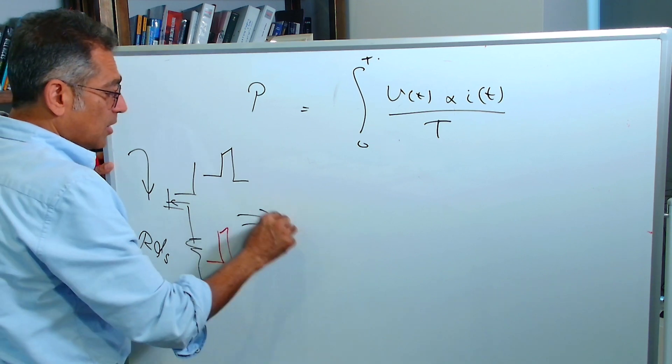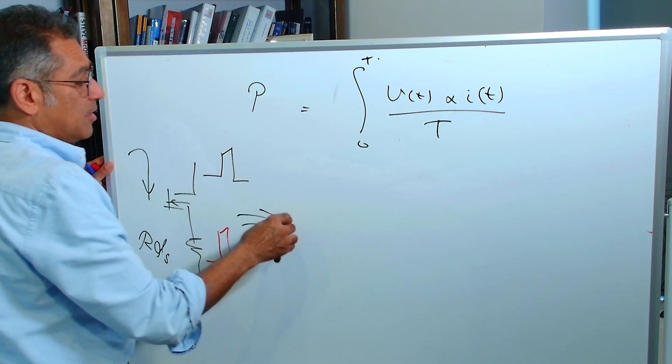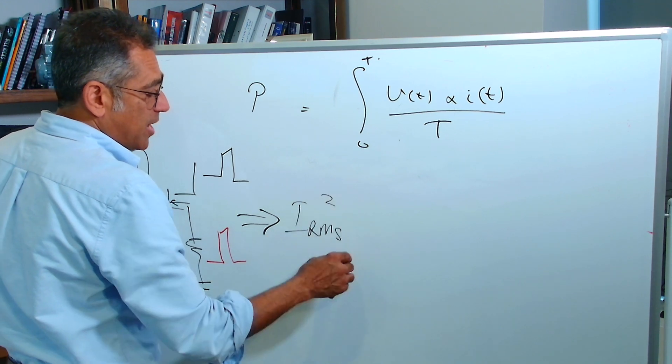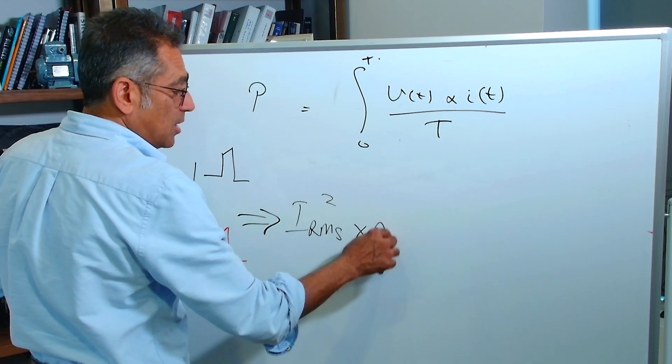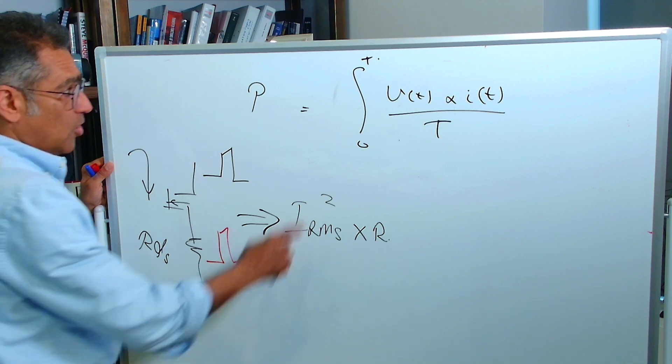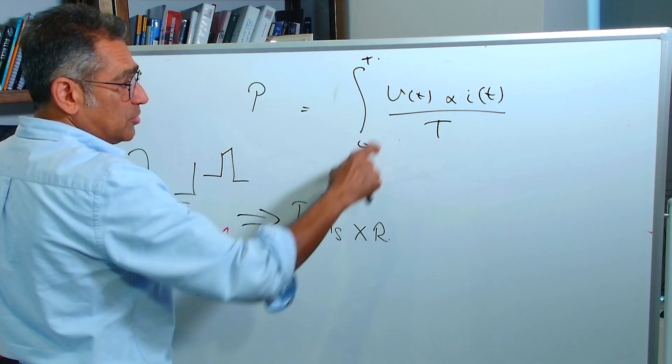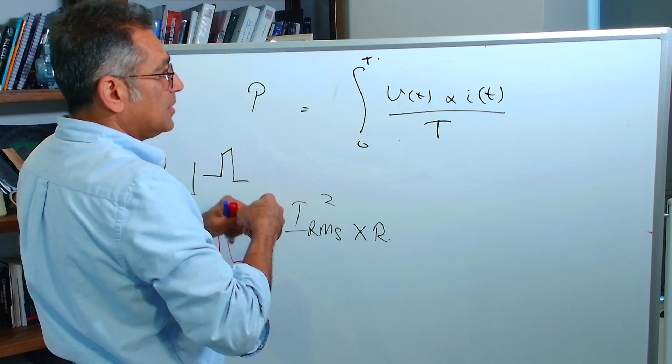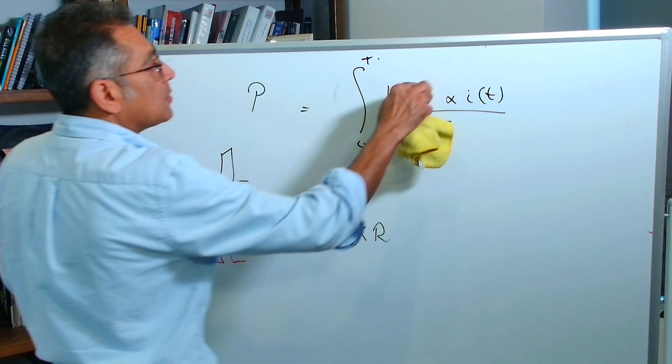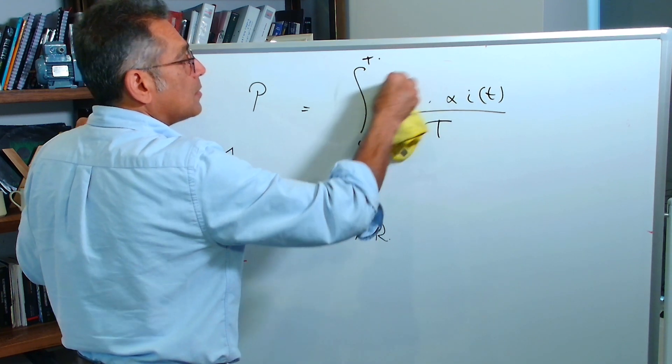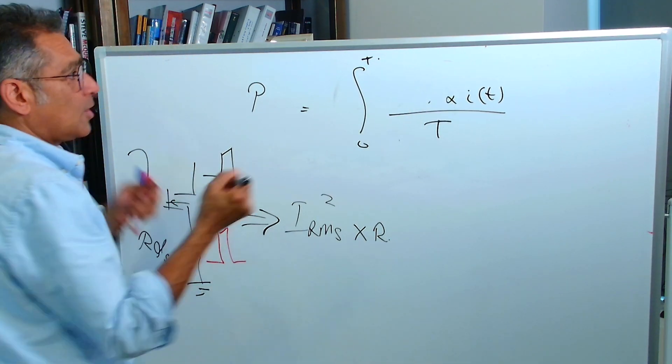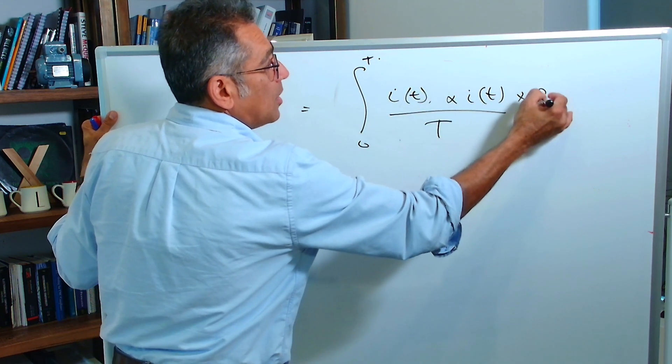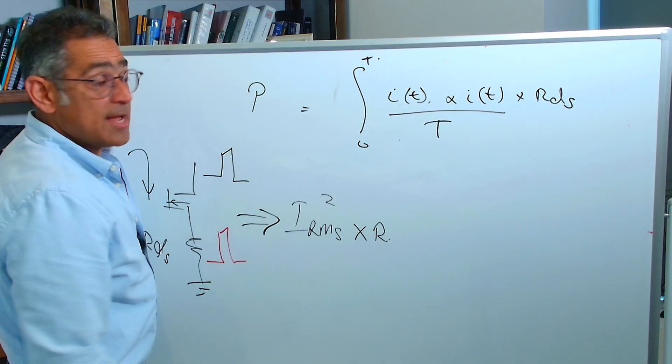And I know that I can write the power loss here as I RMS squared times R. And I know that V is equal to IR. So I can replace that with I of T times RDS.